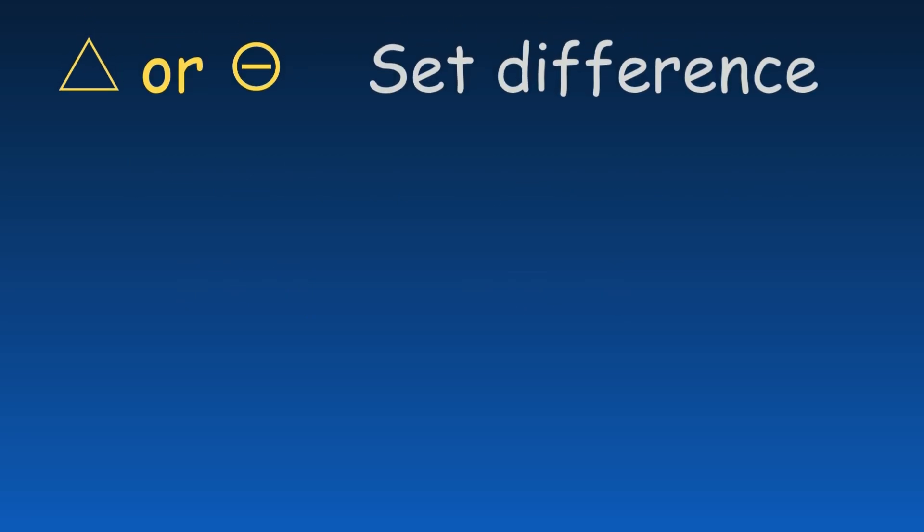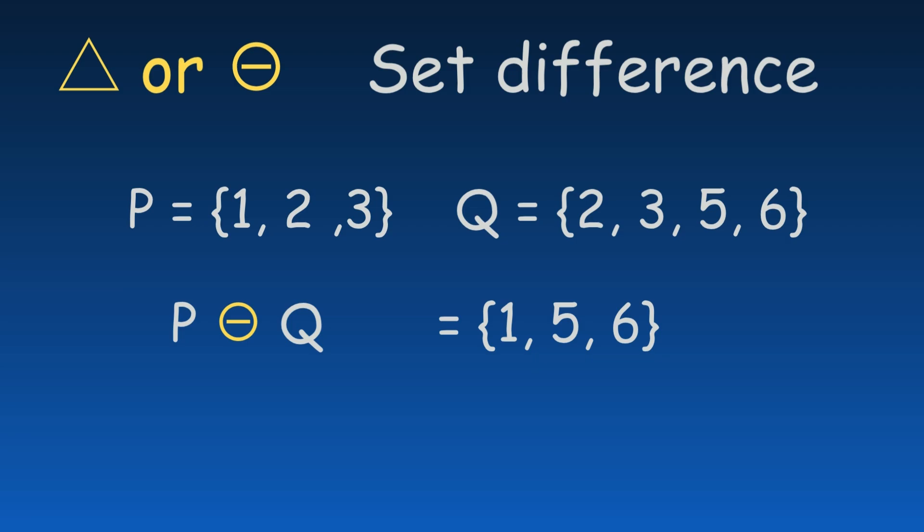The symmetric difference, shown with a triangle or a circled minus, results in a set that contains all the elements that are in either one of the sets but not in both.